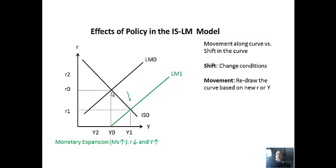In the sixth video, I'll show all the graphs to derive this so you can see it responding. But right now: money expands, LM moves right, the goods market also responds. The change in conditions shifts one curve, and the movement just says pick two points you already drew. You can also see the end result of policies. Expansionary monetary policy leads to higher GDP because rates are lower.